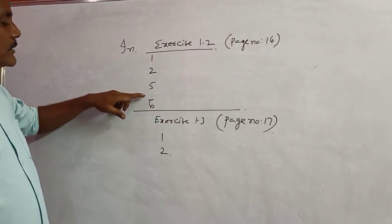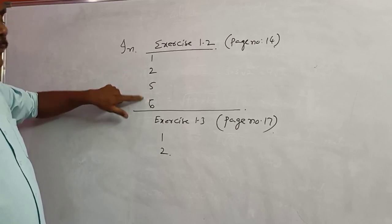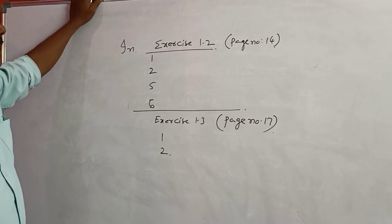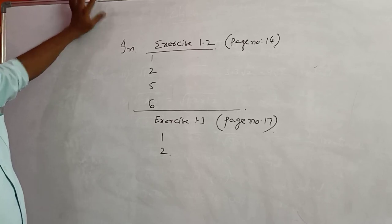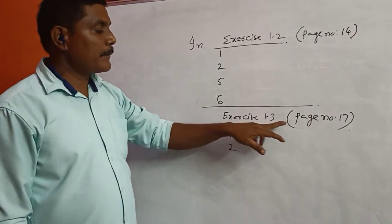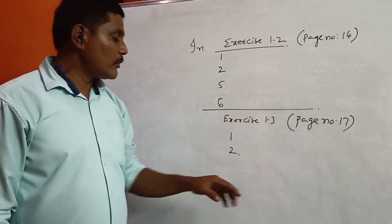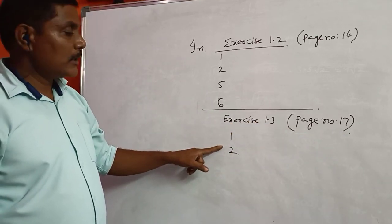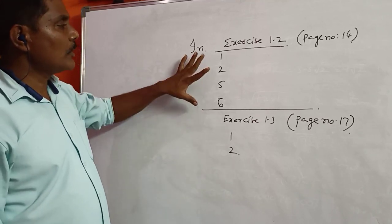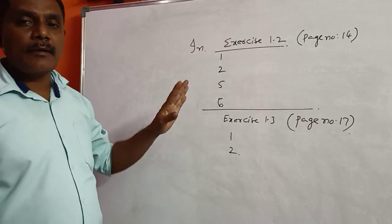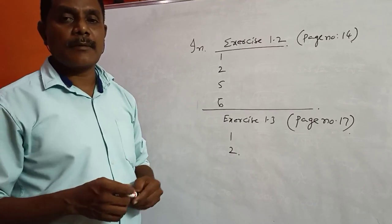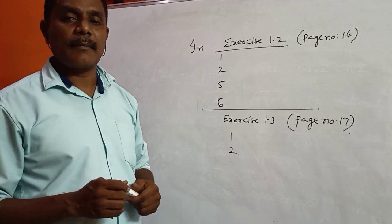There are problems 1, 2, 5, 6 — these four problems are on the concept of irrational numbers and finding the square root. In exercise 1.3, page number 17 in your textbook, do problem number 1 and 2. These two problems are on the magnifying the decimal model. Practice these problems to understand more. Tomorrow we will discuss about some more concepts on real numbers. Thank you.